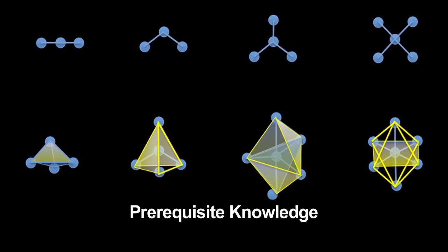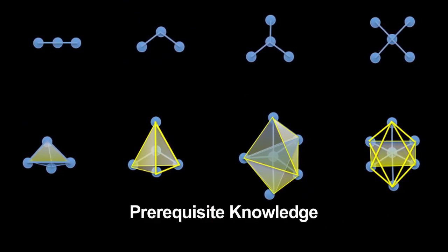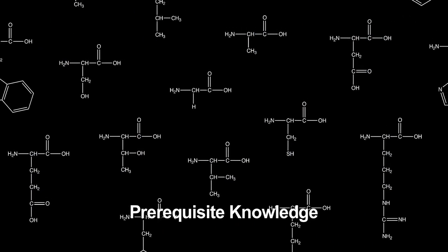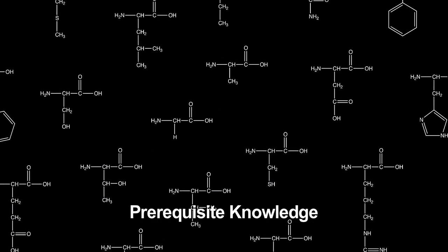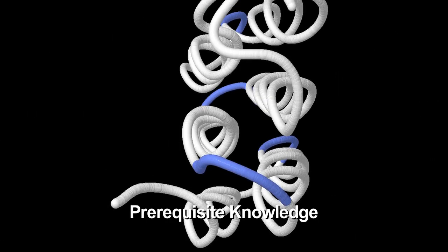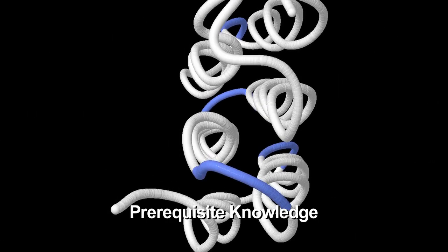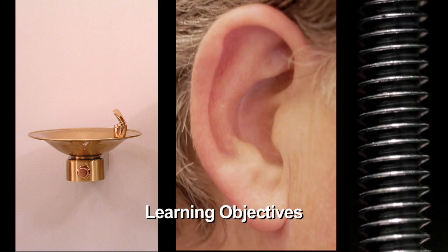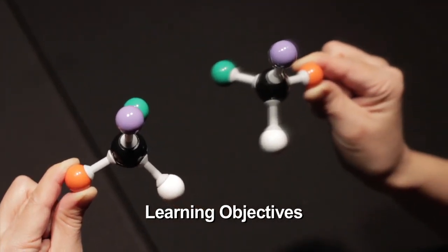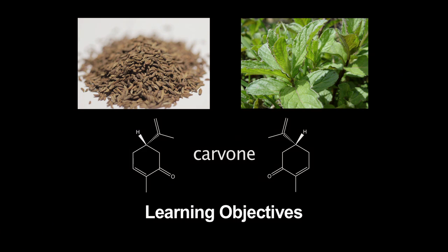Before watching this video, you should be familiar with molecular geometry, the structure of the 20 naturally occurring amino acids, as well as have an understanding of what a protein is and its three-dimensional structure. After watching this video, you will be able to identify chiral objects and molecules and understand how chirality plays a role in the function of biological compounds.